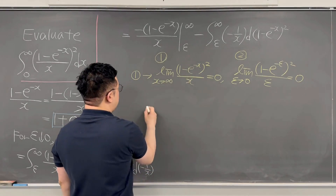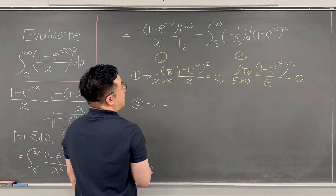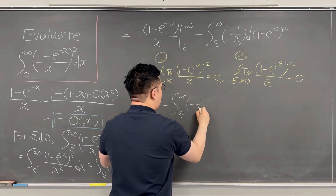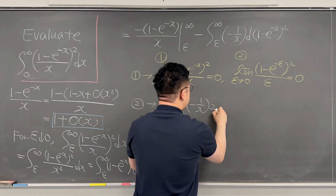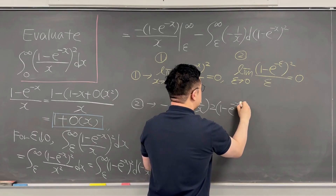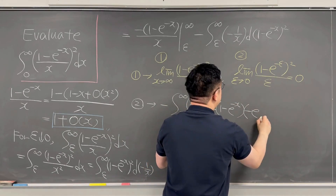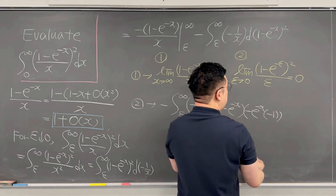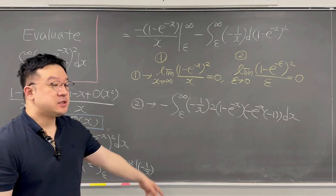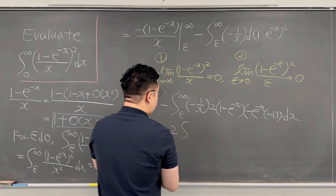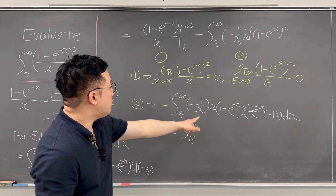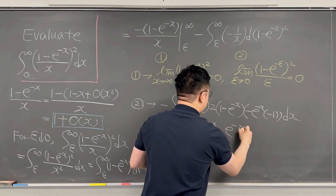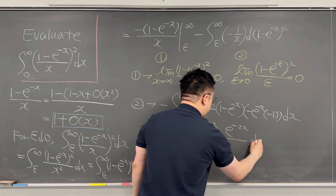Now we concentrate on integral part number 2. Rewriting it, we get negative of the integral from epsilon to infinity of negative 1 over x, times 2 times (1 minus e to the power of negative x) times (negative e to the power of negative x) times negative 1, dx. Simplifying, this is 2 times the integral from epsilon to infinity of (e to the power of negative x minus e to the power of negative 2x) over x, dx.